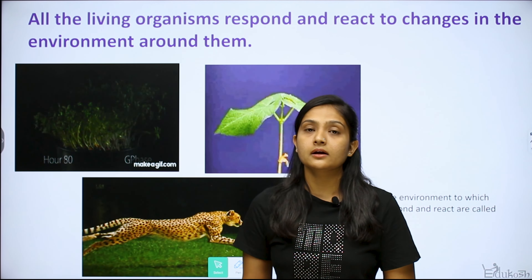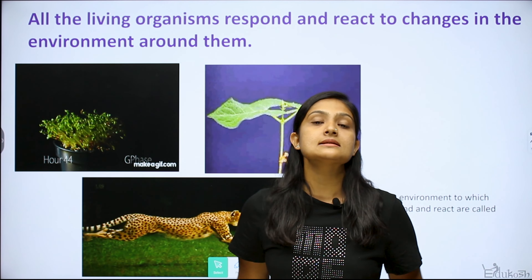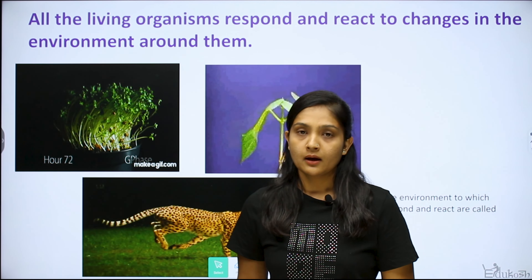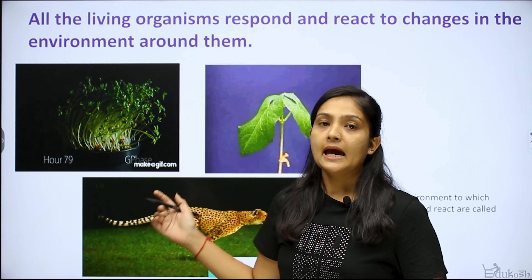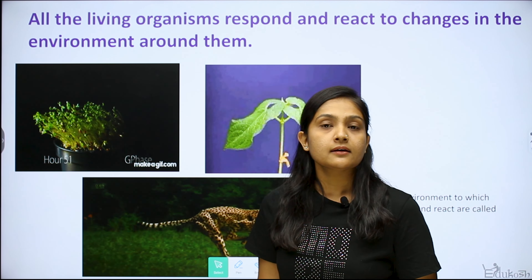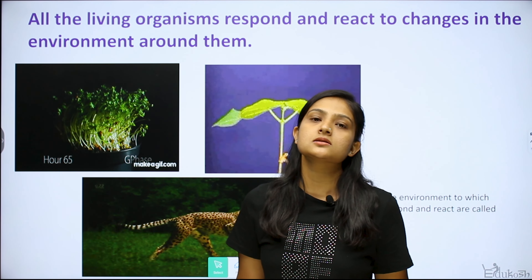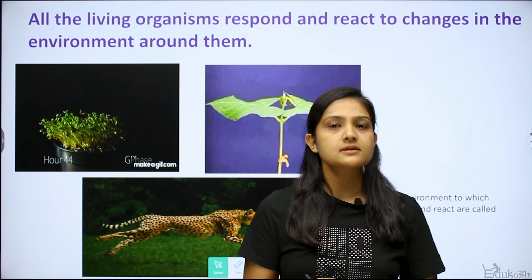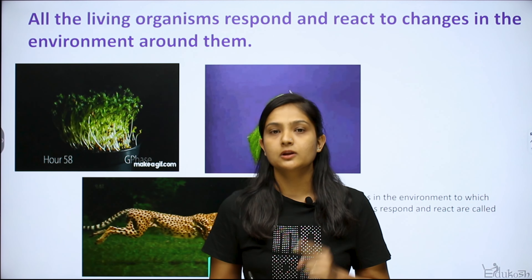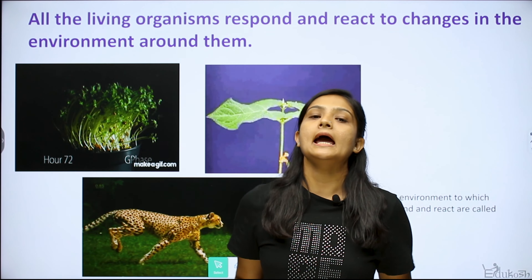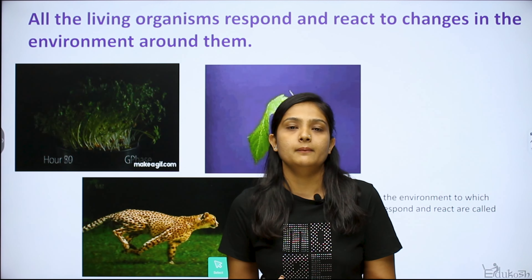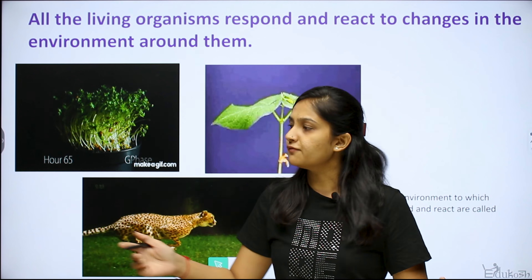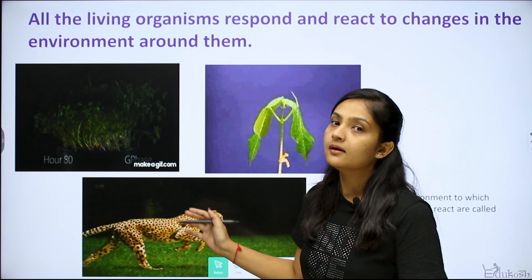How do living things control this? Plants and animals both respond, but animals respond much faster. Why? Because animals have two systems: the nervous system and the endocrine system. These two systems control the entire animal body, which is why the leopard can run so fast.